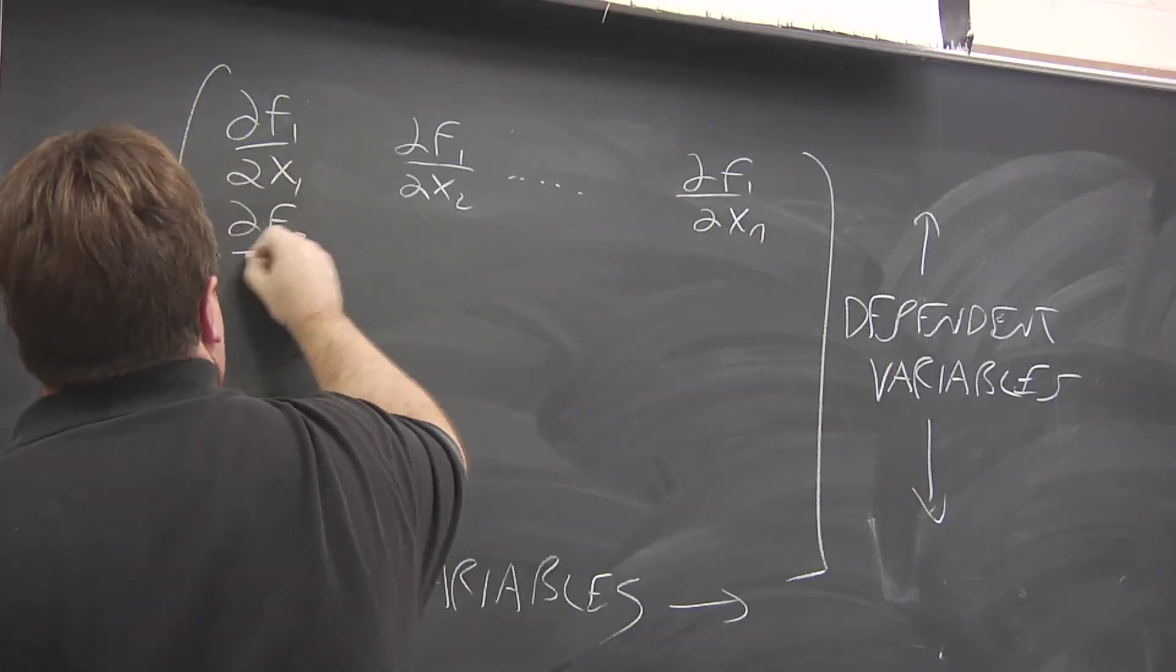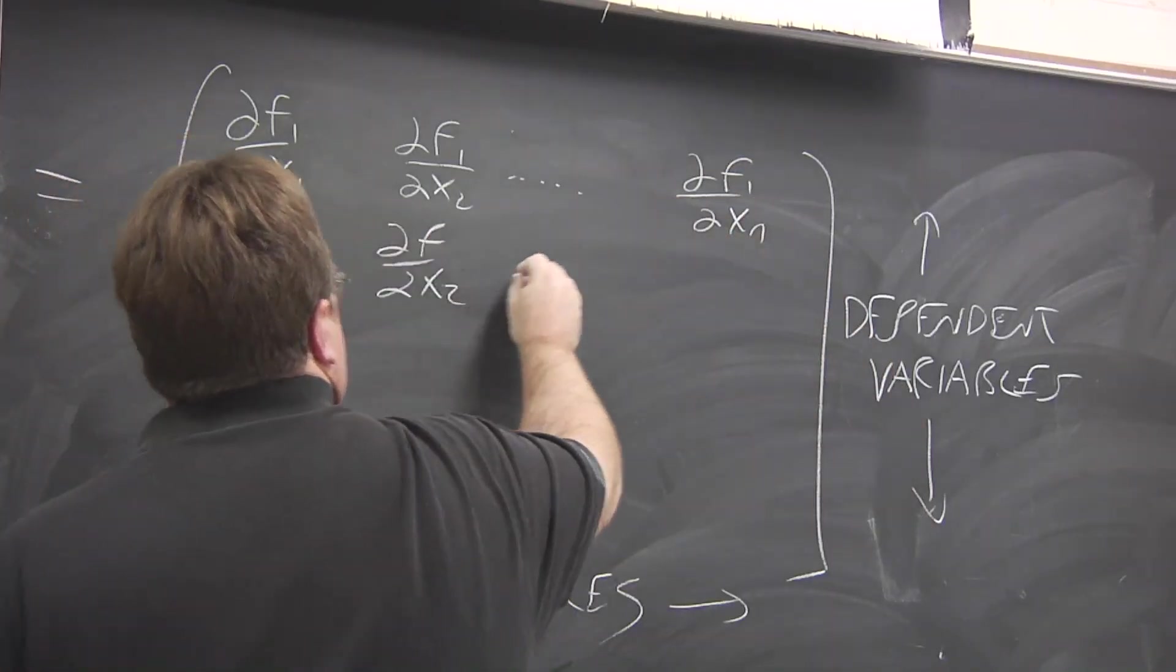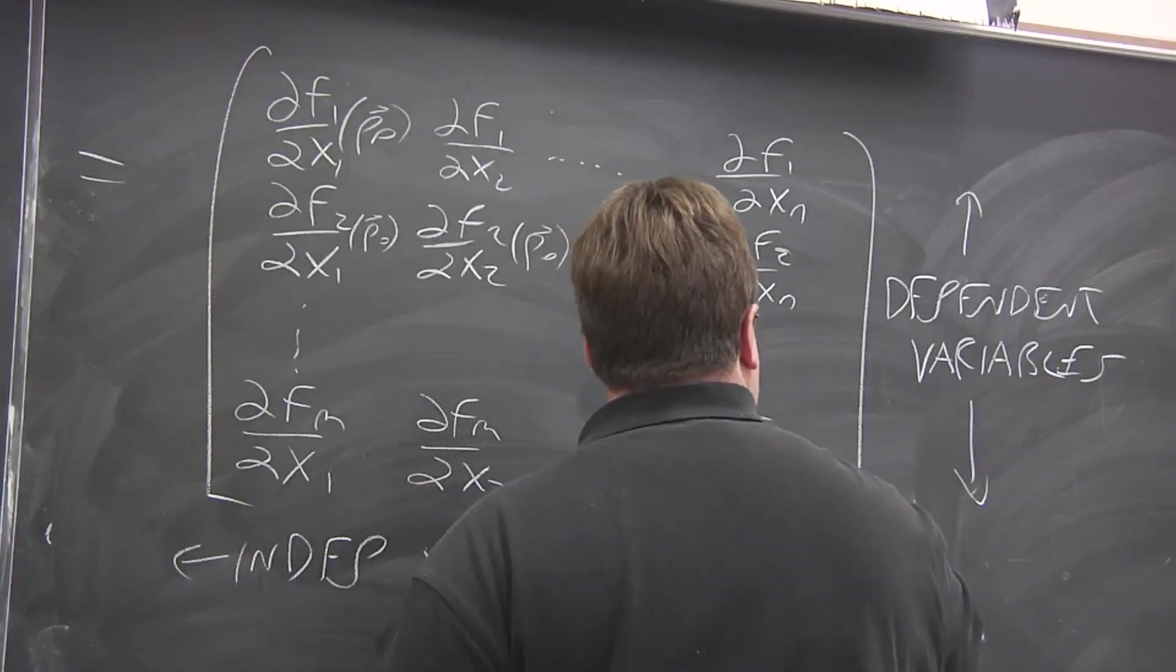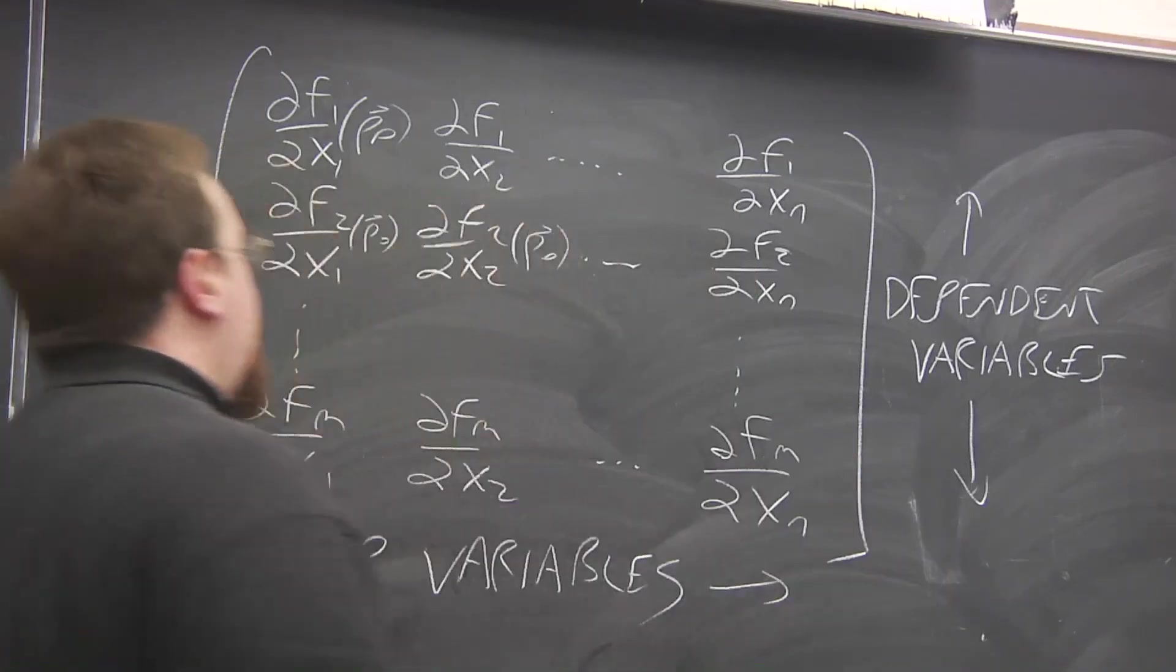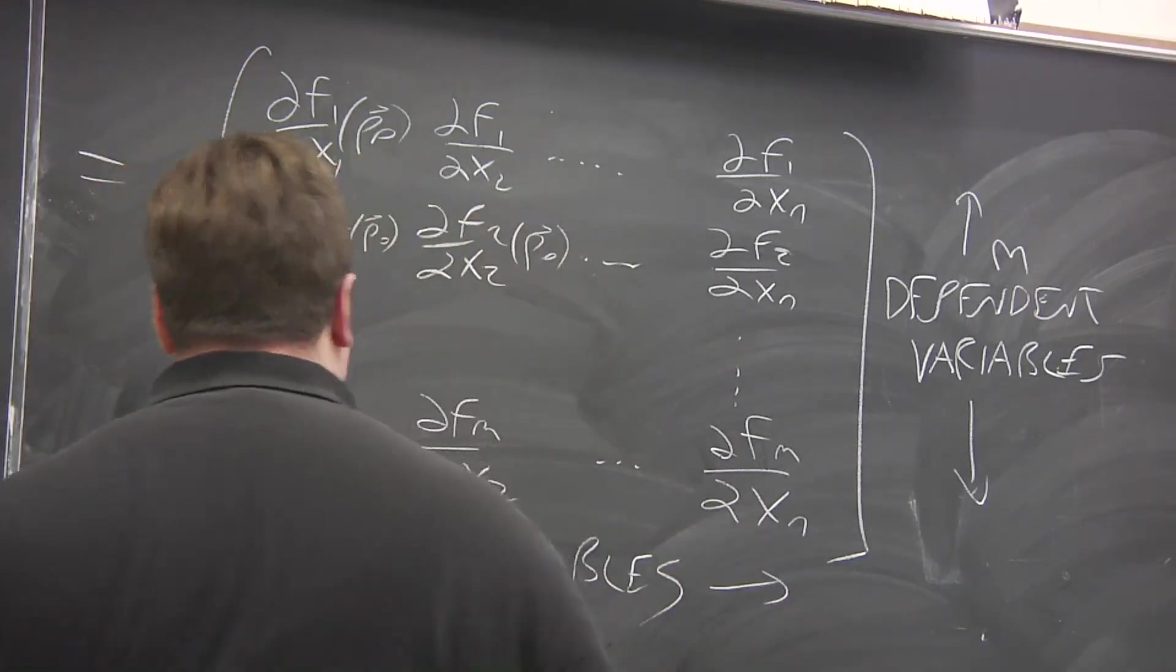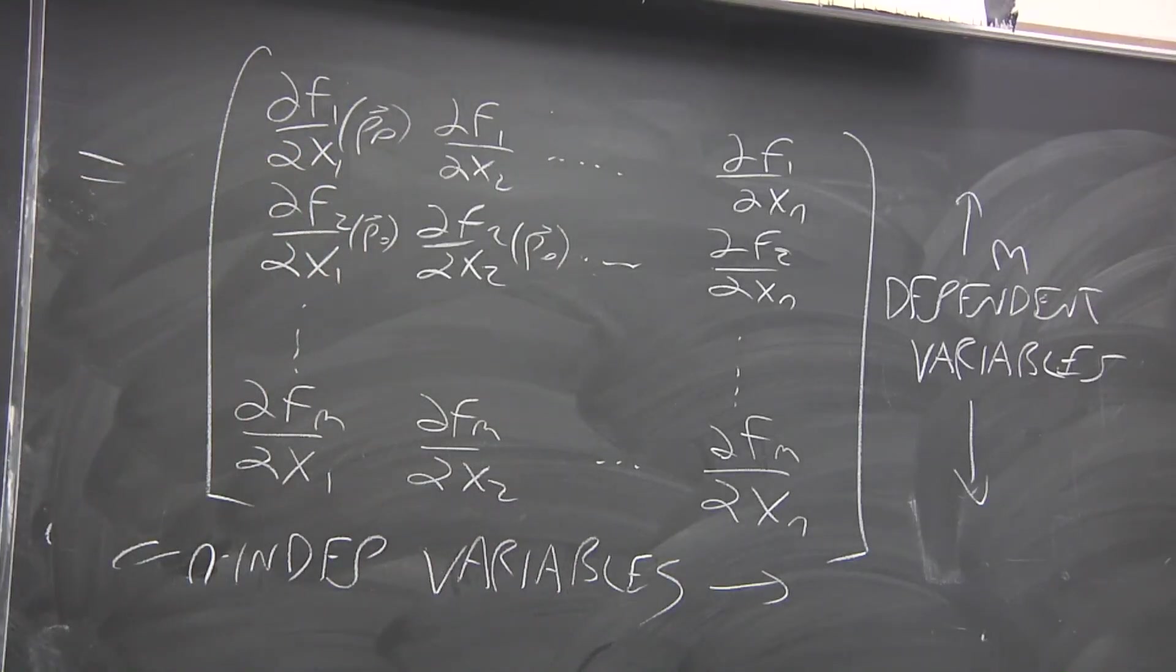Then in the next row, you go to the next component function with respect to x₁, x₂ to xₙ, and all of these are evaluated at p₀, all the way down to the very last component functions with respect to the very last variable.